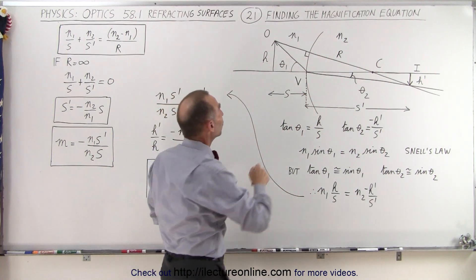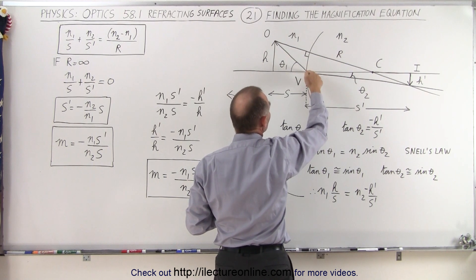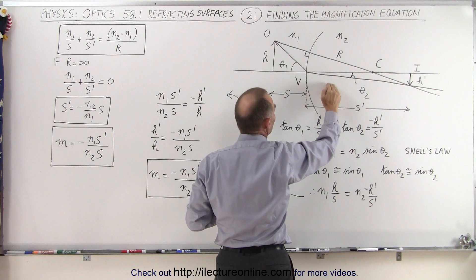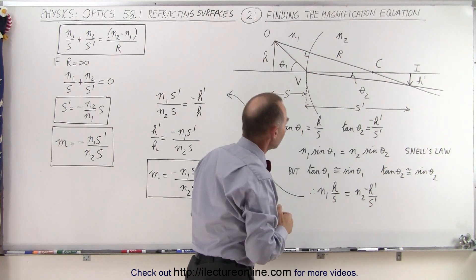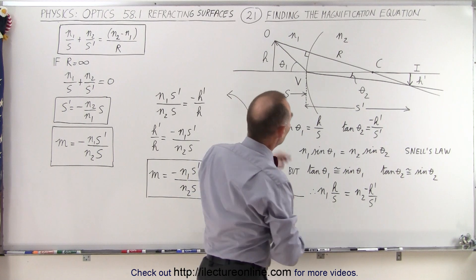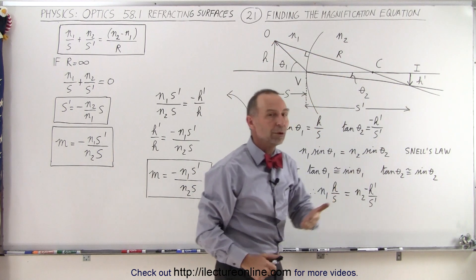Then we have a second ray that starts from the top of the object, meets the surface at the vertex, goes across the boundary, and since there's a larger index of refraction on the other side, it's going to bend towards the normal. Now notice that at some point, these two rays will meet right here. Where they meet, an image will be formed.